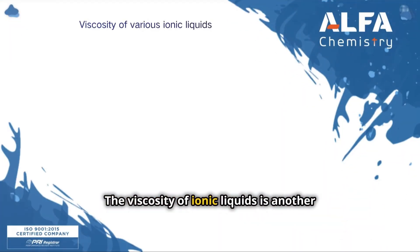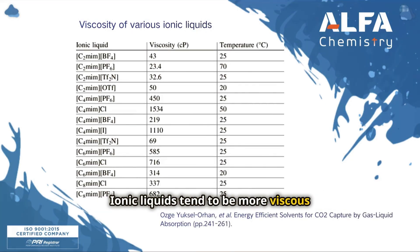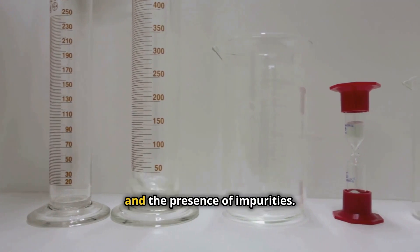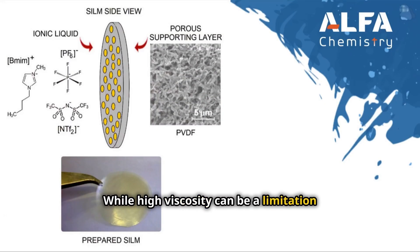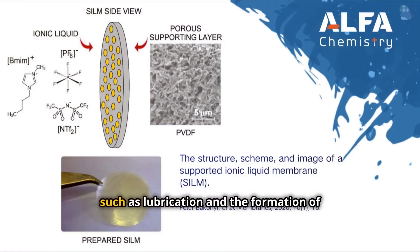The viscosity of ionic liquids is another crucial property that influences their applications. Ionic liquids tend to be more viscous than conventional solvents, and their viscosity is affected by factors such as the size and structure of the ions, temperature, and the presence of impurities. While high viscosity can be a limitation in some applications, it can be advantageous in others, such as lubrication and the formation of stable films.